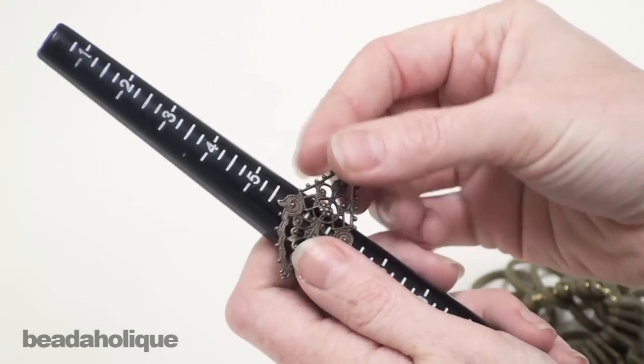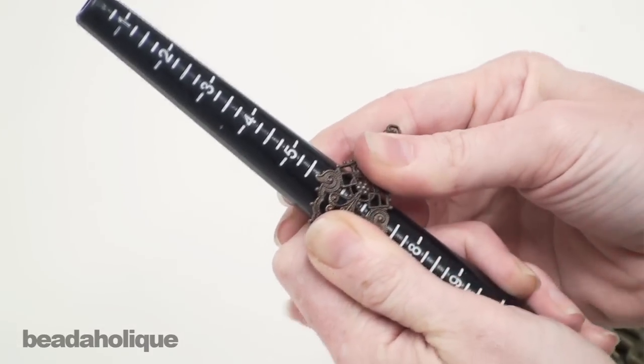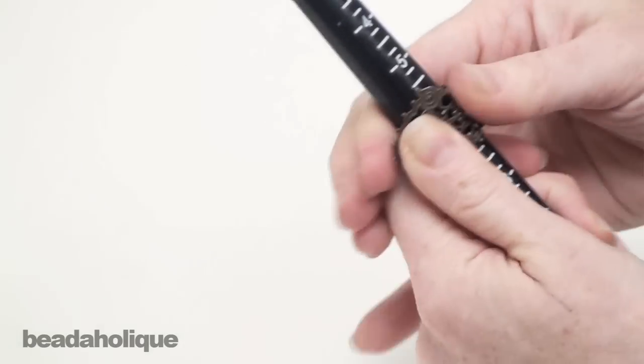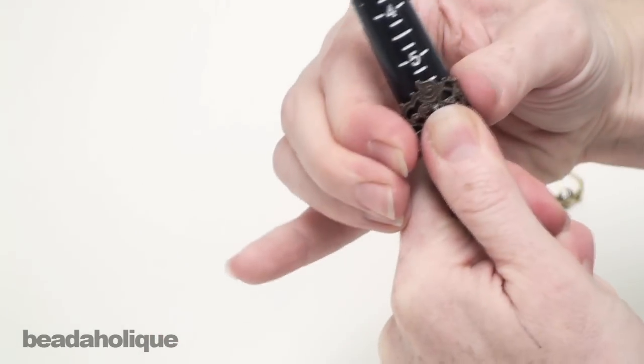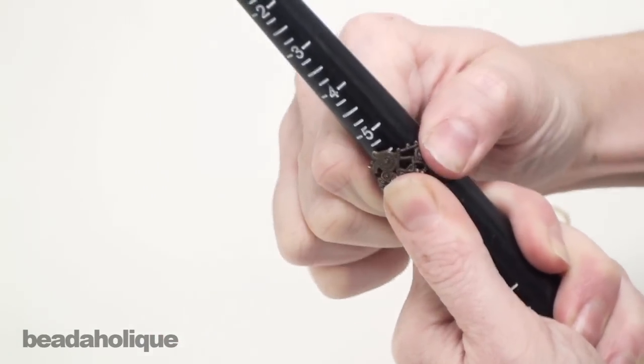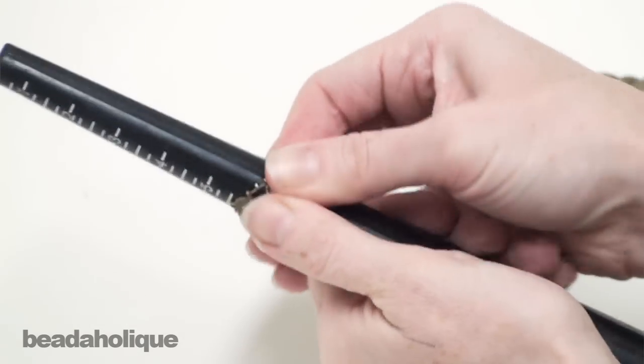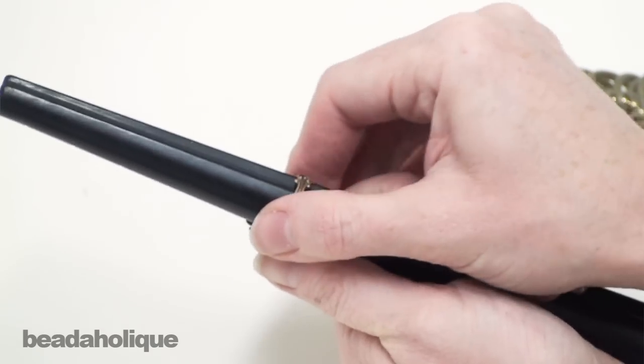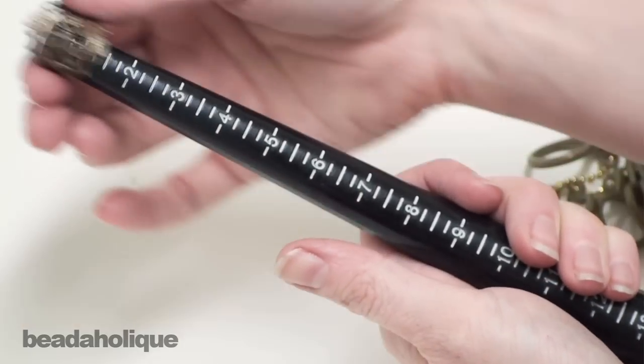So I'm going to do that like so and I'm just going to use the pressure of my fingers and bend. And once you've fully pressed the ring all the way around the mandrel and you have it molded, it does take some firm finger pressure there. You'll take it off of the mandrel.